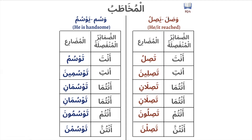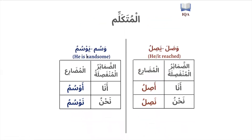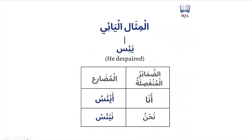So sometimes the mithal al-wawi verb will look a bit strange because the waw at the beginning is dropped. And this is how it looks: asilu, nasilu, yasilu, nasilu — the waw is simply absent from all these mudara' forms.